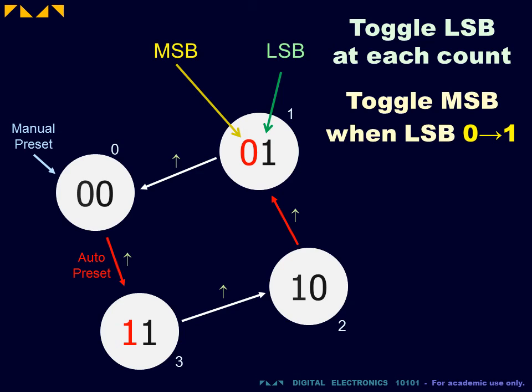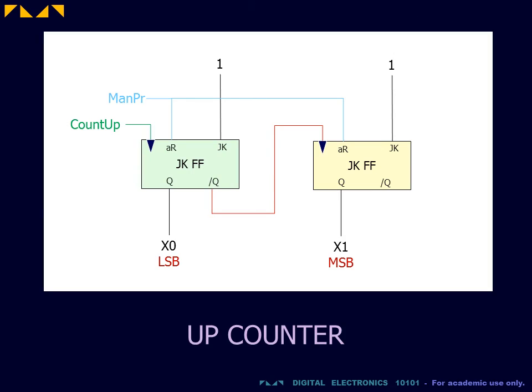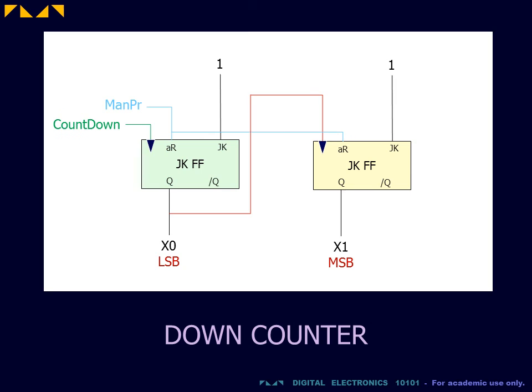Note that for down counting, the auto preset occurs from the lowest value to the highest value. For the up counter, the most significant bit was forced to toggle by the Q bar output of the first flip-flop. For down counting, we can invert this toggle condition by driving it from the Q output of the first flip-flop.